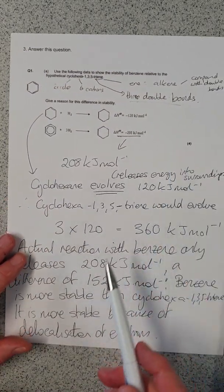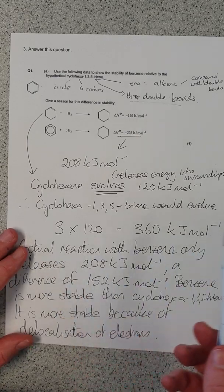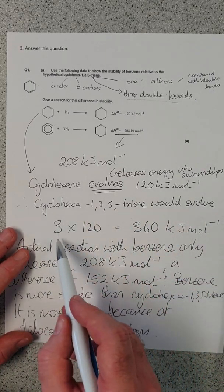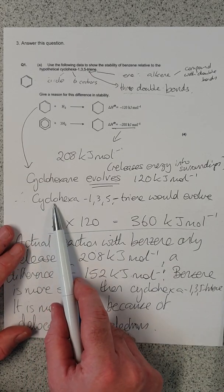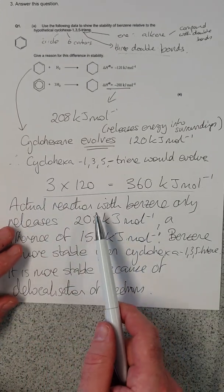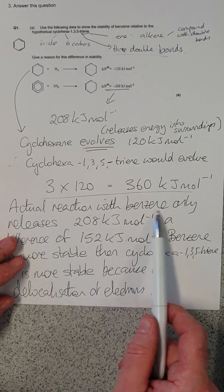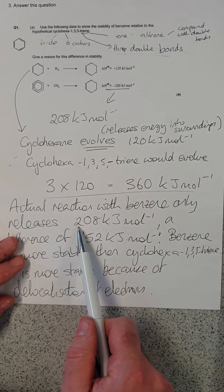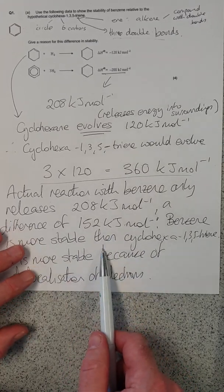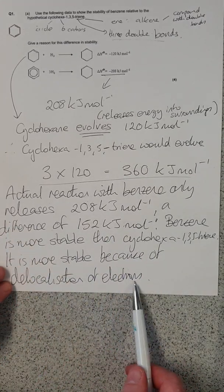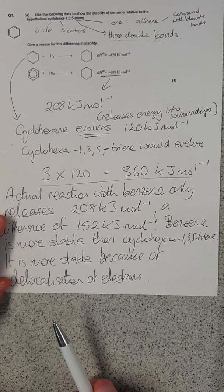Okay, so that was four marks. You would get marks for working out how much energy we'd expect to have been released from this hypothetical molecule. We get marks for saying that the actual reaction of benzene only releases 208 and working out the difference. And you get marks for mentioning why that is. It's because of the delocalization of electrons.